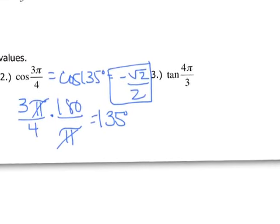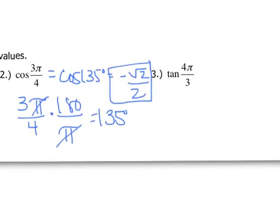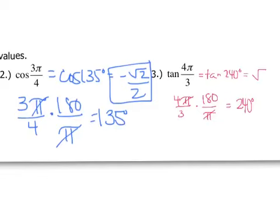And then finally, for 4π over 3, I'm going to start off by just converting that to degree measure. So my π's cancel. So 4 times 180, then divided by 3 is what? What is it? 240? So tangent of 4π over 3 is the same as tangent of 240. I have radical three.